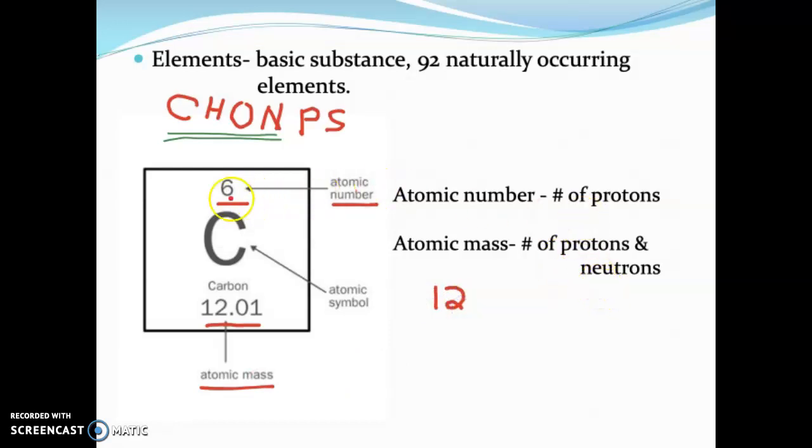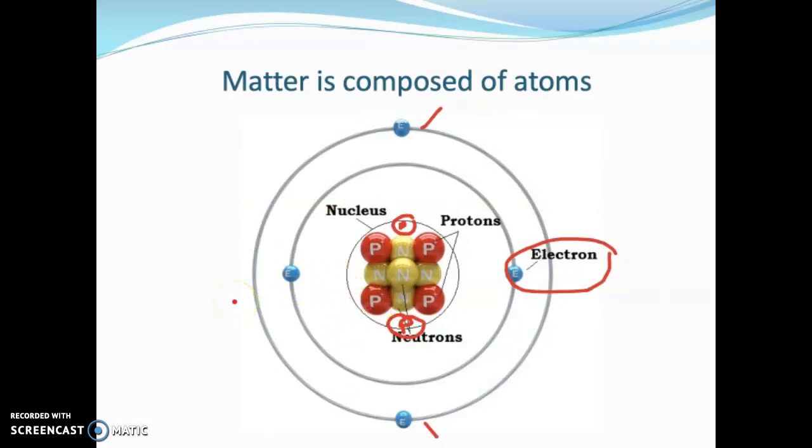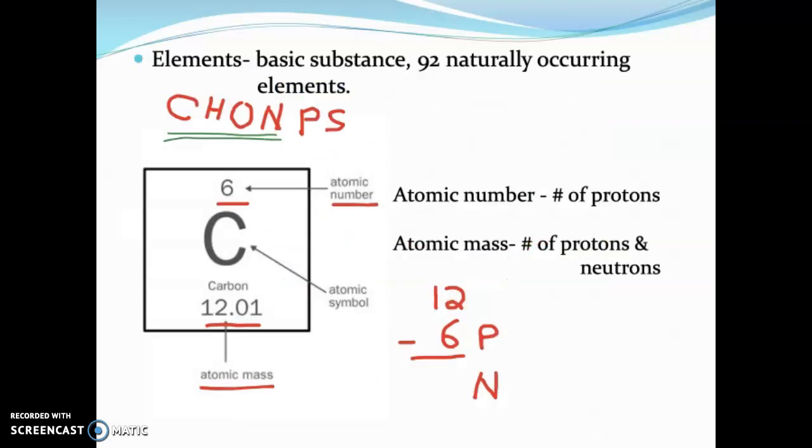Now the number on the bottom here is the atomic mass. The atomic mass is actually a combination of protons plus neutrons. So we do a quick little bit of math here: if the combination is 12 protons and neutrons, and carbon has six protons, how many neutrons does it have? Everybody should be able to fill in that blank. So if we jump back here, this picture would not be accurate for carbon because it only has five neutrons, so we'd have to stick a sixth neutron in the center there to create the actual carbon picture.